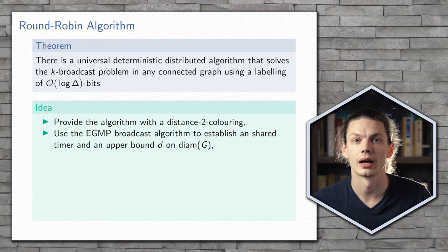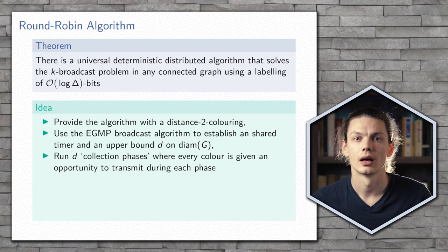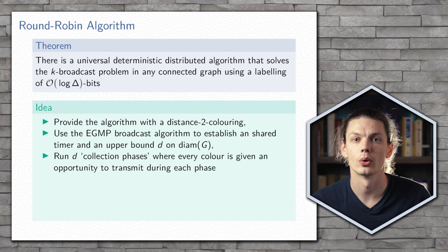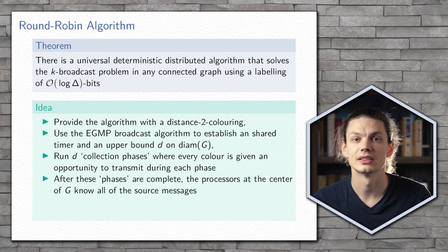Having a distance-2 coloring ensures that there's enough separation between processors of the same color so that if they transmit in the same round, all of their neighbors will receive their message. We use the EGMP broadcast to again establish this shared timer, as well as establish an upper bound on the diameter of the graph. This upper bound on the diameter is also an upper bound on how far each message needs to travel to get back to the coordinator.